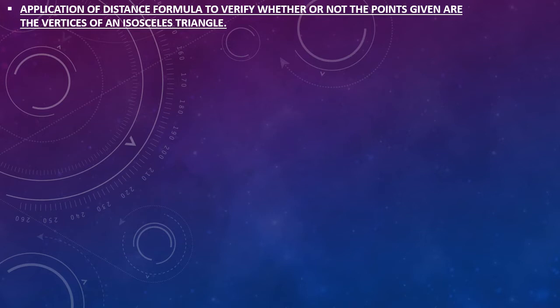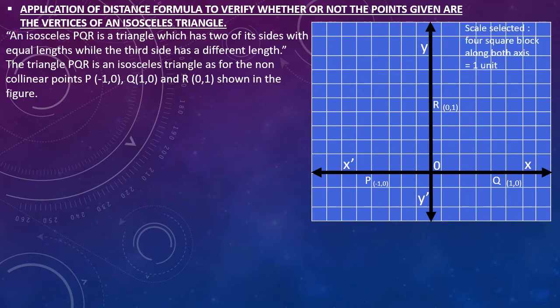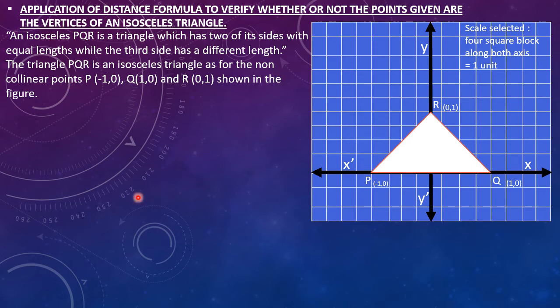Now we are going to see how to apply the distance formula to verify whether or not the points given are the vertices of an isosceles triangle. An isosceles triangle PQR is a triangle which has two of its sides with equal length while the third side has a different length. The triangle PQR is an isosceles triangle for the non-collinear points P, Q and R as shown in the figure. Here we have plotted the points P, Q and R and joined them to form triangle PQR.